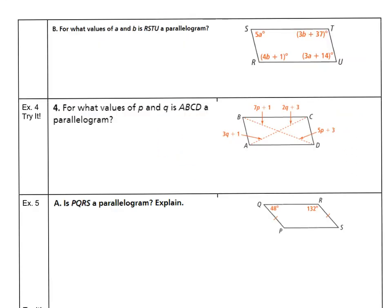Changing gears a little bit, let's take a look at angle measures inside the quadrilateral. For what values of A and B will make RSTU a parallelogram? Looking at the definitions for angles, we can either do consecutive angles are supplementary, or opposite angles are congruent.